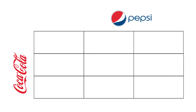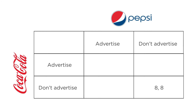Suppose we have the following payoff matrix. Without advertising, Coke and Pepsi split the market and each make eight units of revenue. Advertising costs a firm five units. If both firms advertise, they still split the market but each pays five units for ads, so both end up with a payoff of three. If only one firm advertises, it gets the whole market — so if Pepsi advertises and Coke doesn't, Pepsi gets 16 minus five for a total of 11, and Coke gets nothing. Same idea if Coke advertises but not Pepsi. Clearly both firms would prefer the outcome where neither advertises and each gets a payoff of eight — that would be the best cooperative strategy. But if they can't cooperate, each has a dominant strategy to advertise, forcing them to an equilibrium where each gets a payoff of only three.